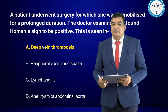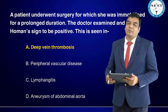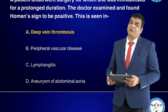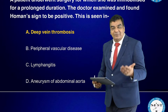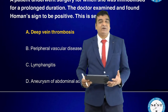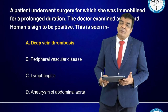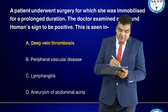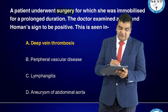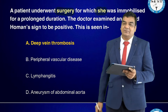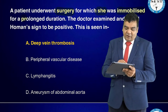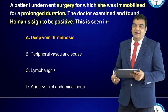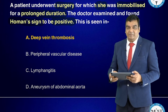A patient underwent surgery and was immobilized for a prolonged duration; the doctor found Homans' sign to be positive. Homans' and Moses' signs are clearly seen in deep vein thrombosis. The history of surgery and prolonged immobilization with Homans' sign positive — this is a single-liner for deep vein thrombosis.